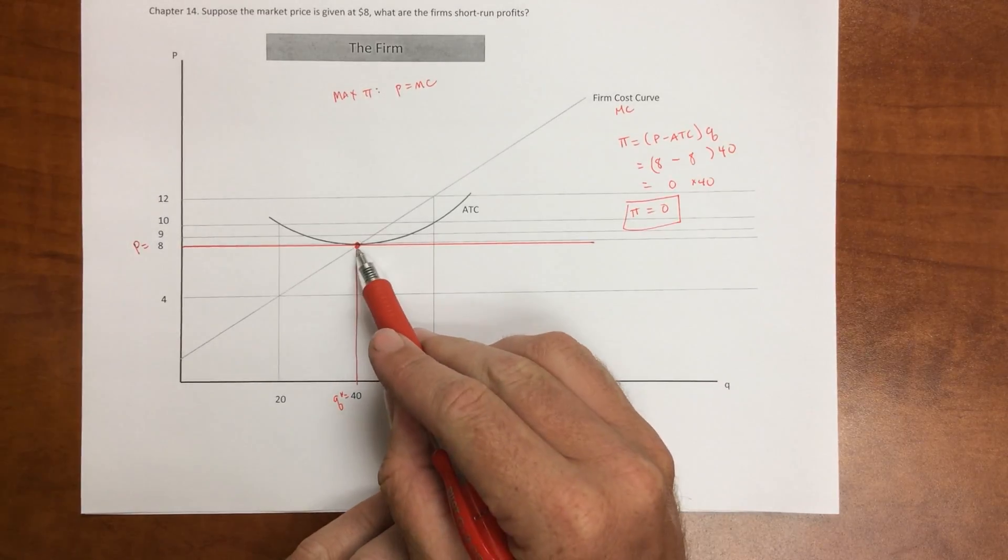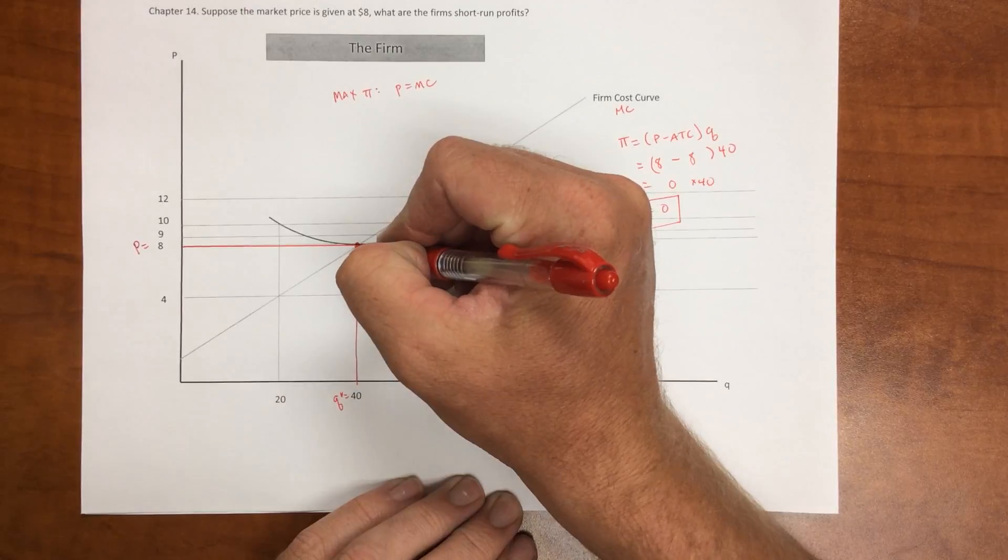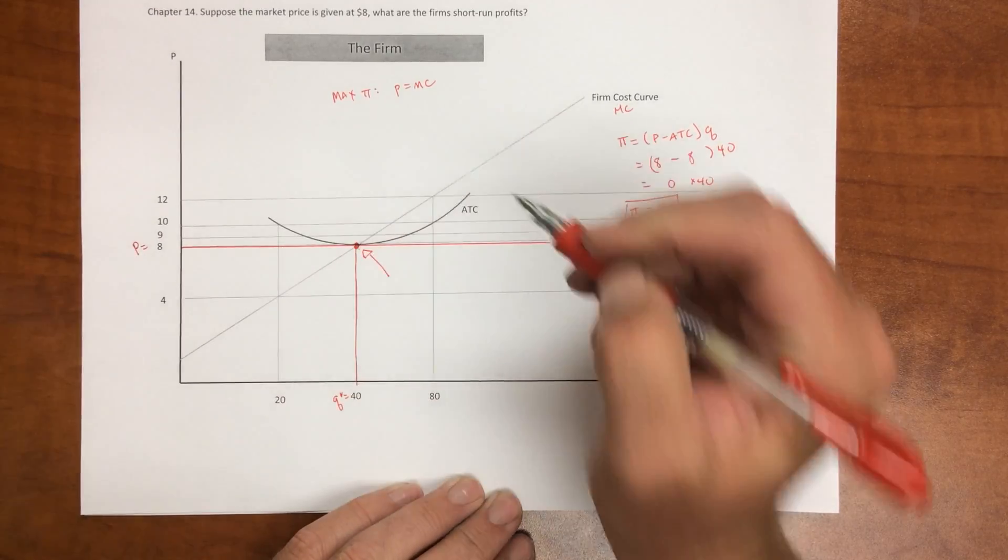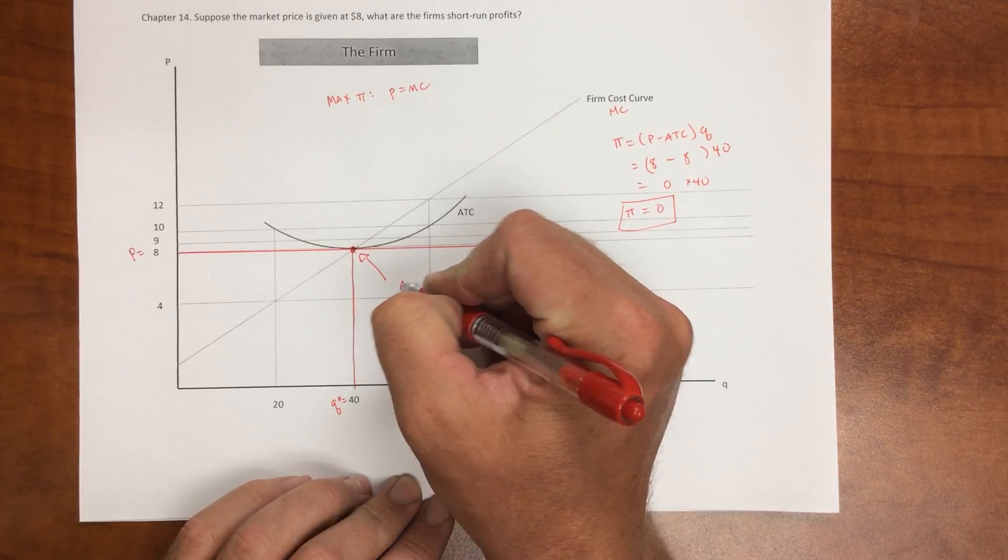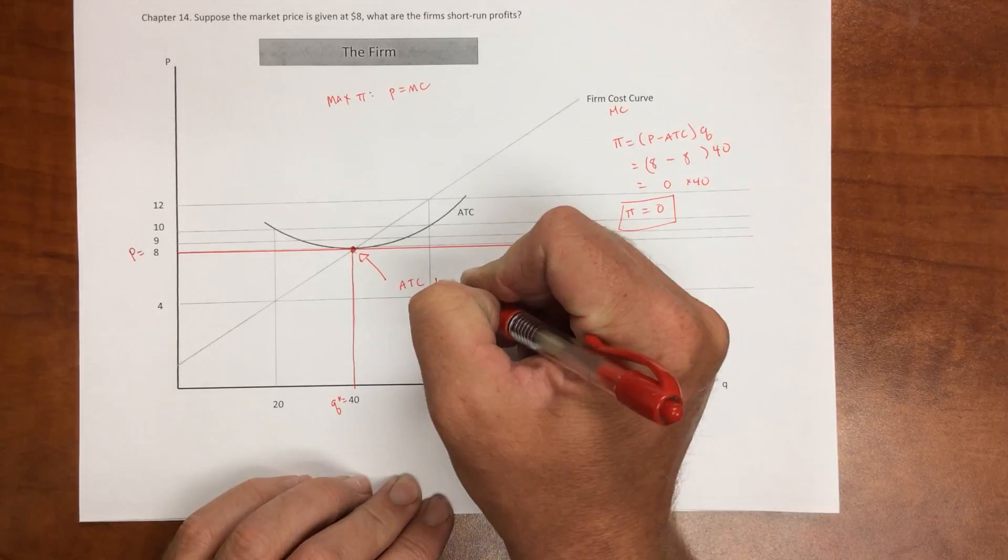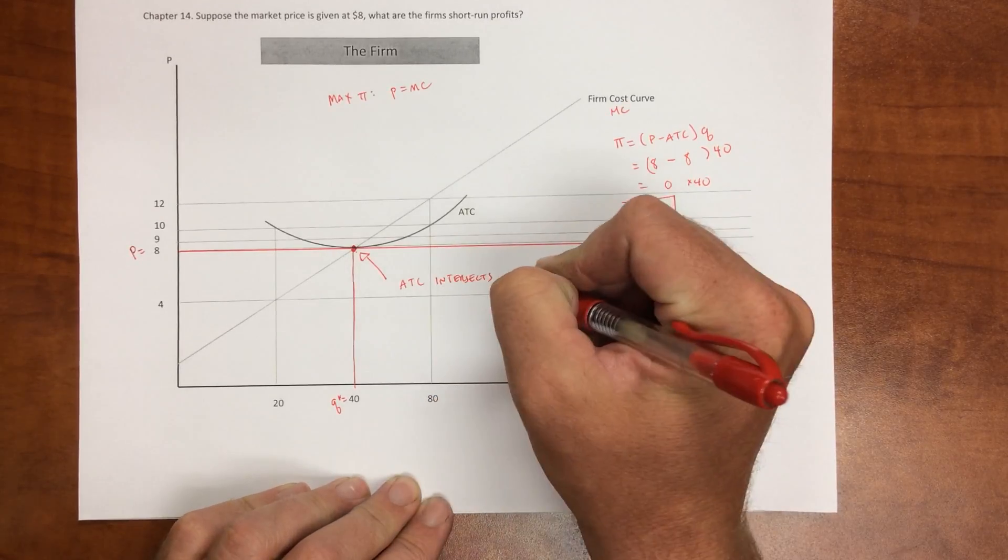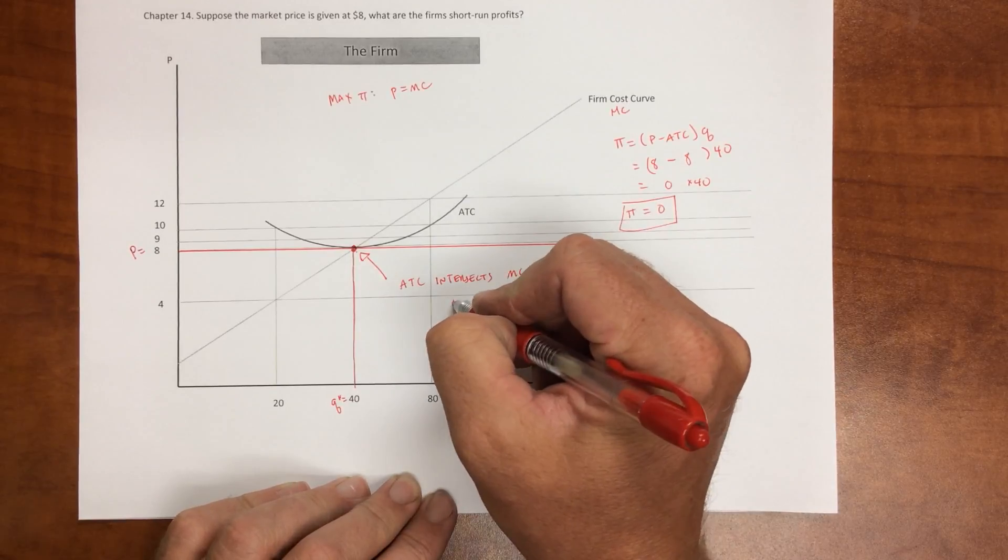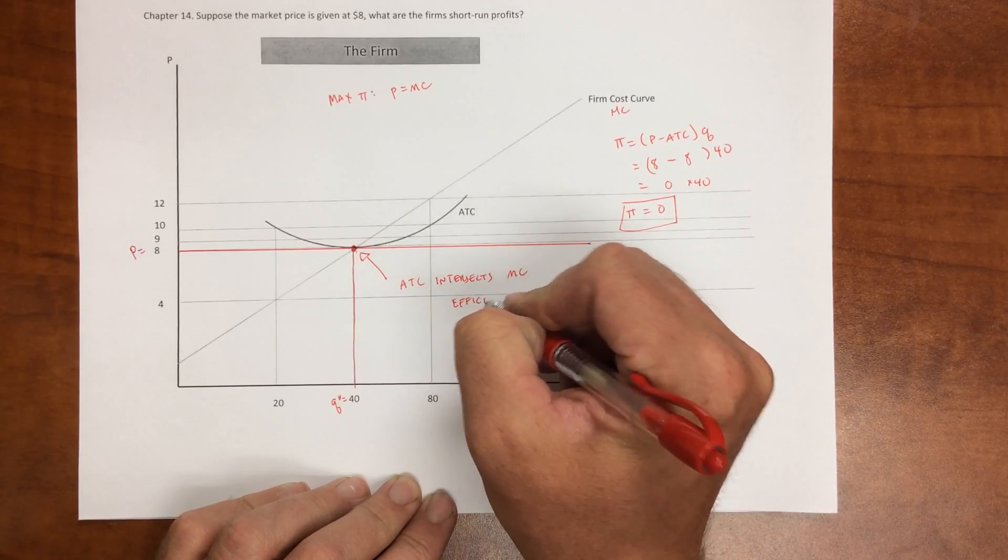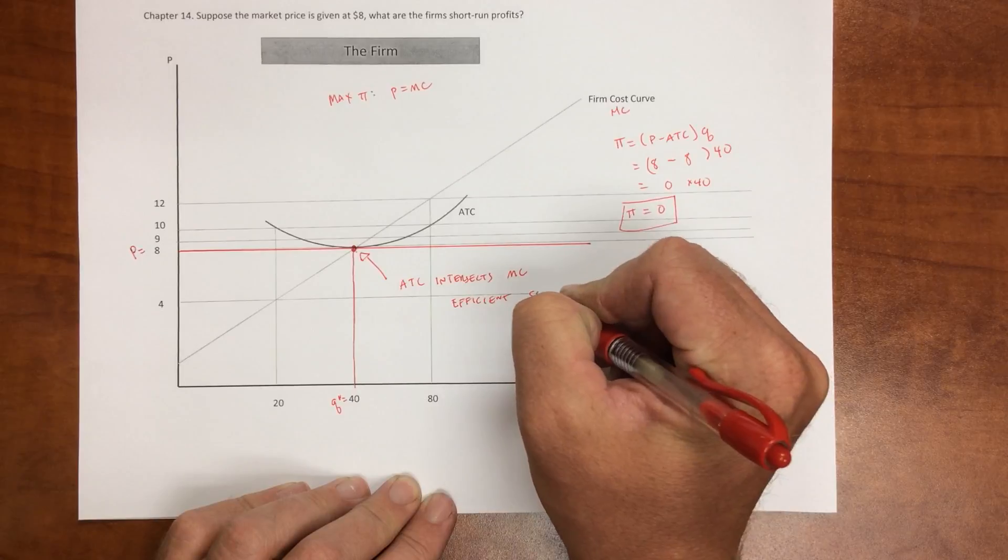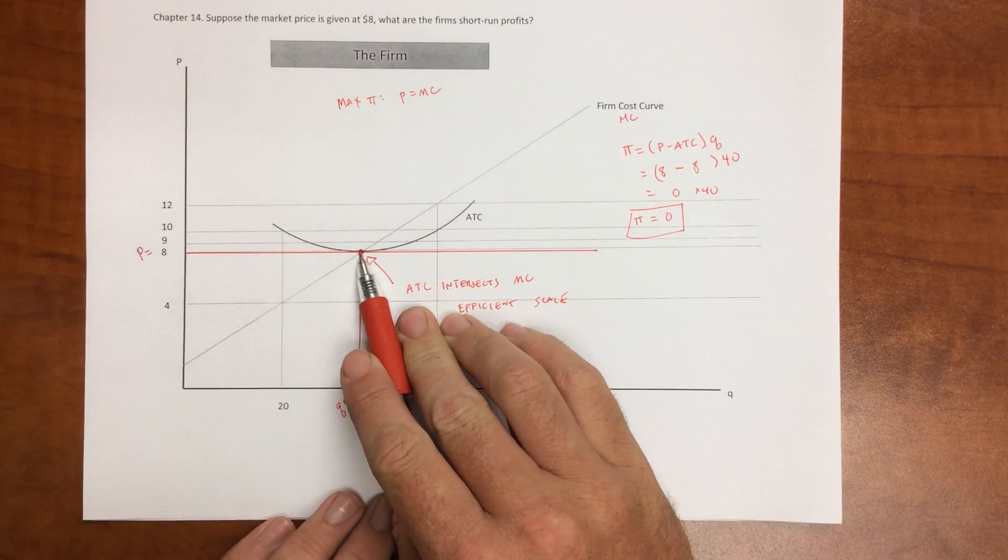And what that tells us is that the reason that's the case is because at this point here, this is where the average total cost intersects the marginal cost, is called the efficient scale. And if price is set where those intersect...